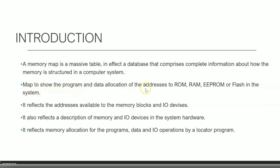The memory map is used to show the program and data allocation of addresses for RAM, EEPROM, Flash, and so on. For ROM, it indicates the starting and ending address of stored data, and similarly for RAM, EEPROM, and Flash. It reflects the addresses available to memory blocks and I/O devices — how much memory is available, how much is consumed, and what remains for further allocation.